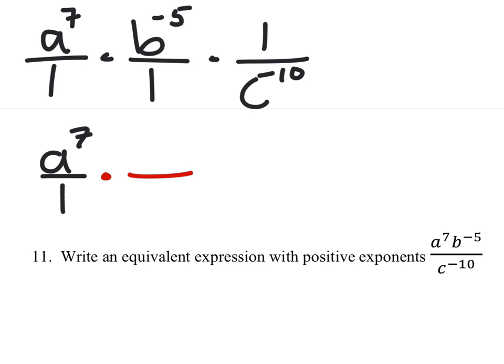But this b to the power of negative 5 we should reciprocate. So that, let me fix that, 5, there we go. The b to the power of 5 is now in the denominator because the exponent was negative.